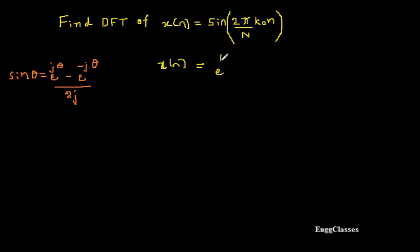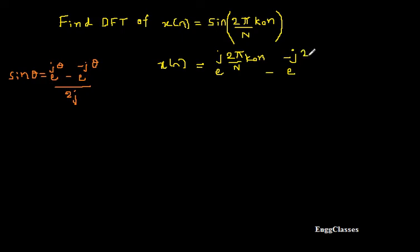So here: e^(j·(2π/N)·k₀·n) minus e^(−j·(2π/N)·k₀·n), all divided by 2j. So this is what I have, divided by 2j.